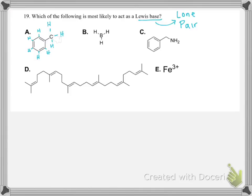One of my favorite expressions referring to B is: don't be a moron, remember boron. Boron only needs six electrons. So this is actually the final Lewis structure — no lone pairs — so that one's out.